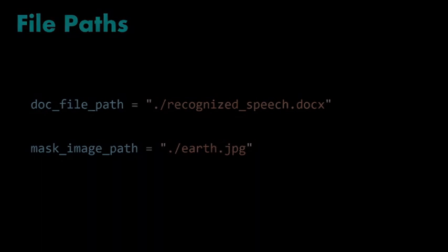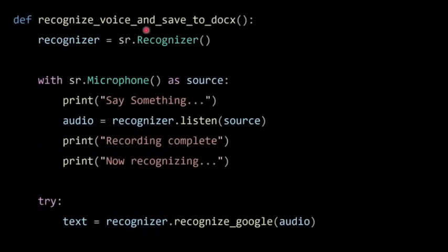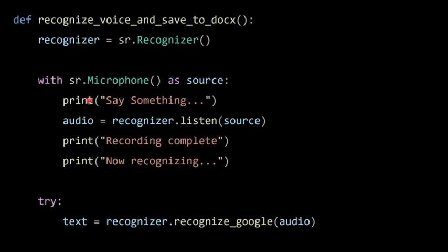Now let's define a function. This function recognizes the voice and saves it in a doc file. First, I'm taking a variable called recognizer and saving SR.Recognizer() to it. Then with SR.Microphone() as the source, I'm printing 'say something' — this will print in the output first, then when a person says something the microphone will recognize it as the source.